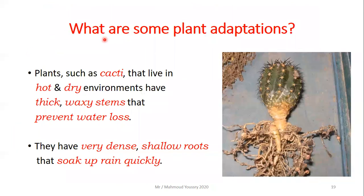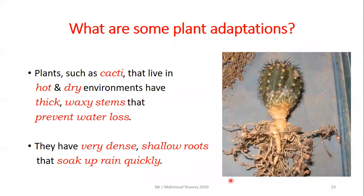Other plant adaptations include desert plants like the cactus. In the hot dry environment, they have thick waxy stems to prevent water loss. Their roots are shallow and very dense in order to soak up rain quickly.